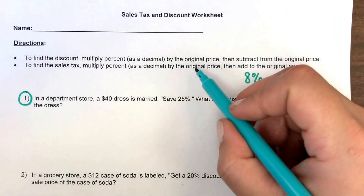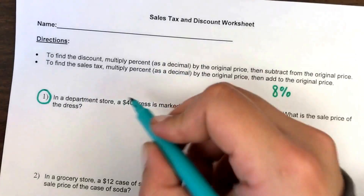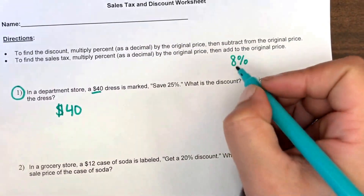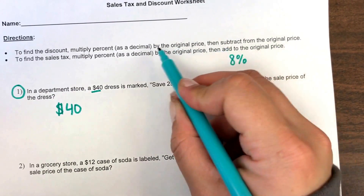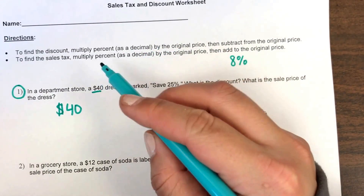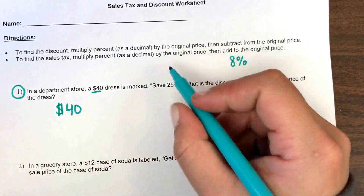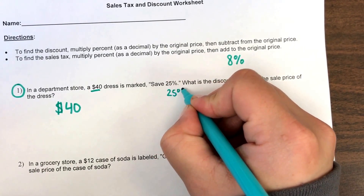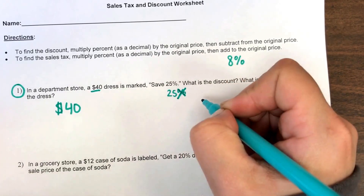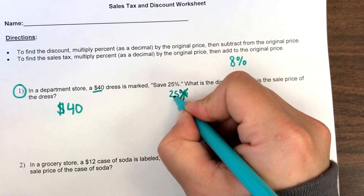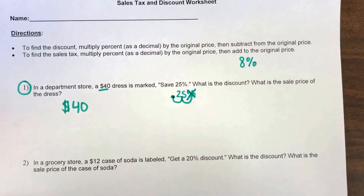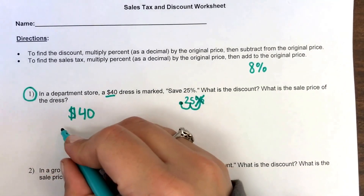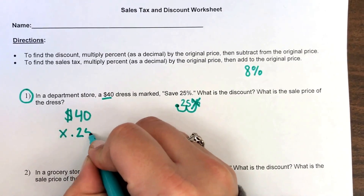As the directions say, start with your original price which is $40. The next part says multiply by the percent as a decimal. It says save 25%, so I take 25%, drop the percent sign, and move the decimal two places over. So 25% as a decimal is 0.25, which I'm going to multiply by my original price.